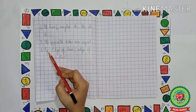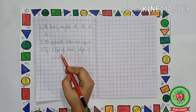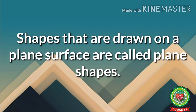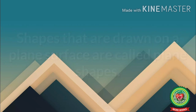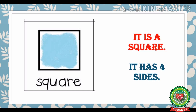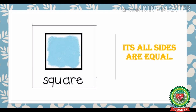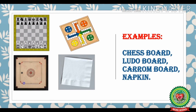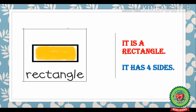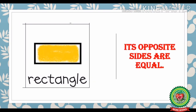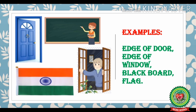Now the last point is examples. We can write two or three like edge of a door or edge of a window. Let us recall what we have learnt today. Shapes drawn on a plane surface are called plane shapes. Square has four sides, four corners, four angles and all sides are equal. Rectangle also has four sides, four corners and four angles, but unlike square, its opposite sides are equal. We discussed examples of both square and rectangle.